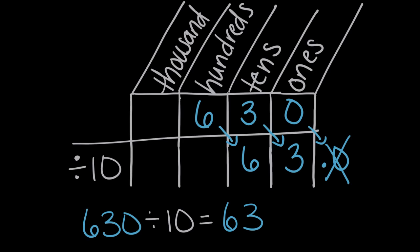So again, two ways to think about dividing by 10. Either we can cross off a zero, or we move every digit, each digit, one place value to the right.